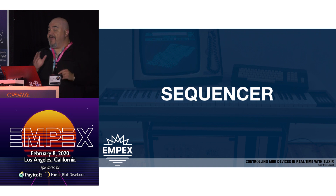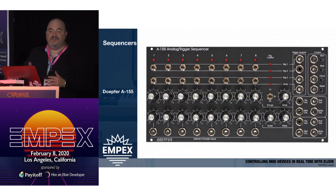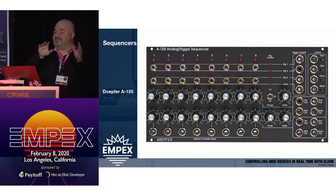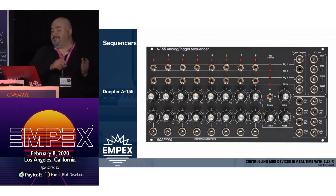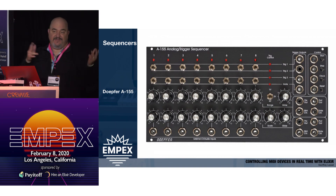One of the things we're going to talk about is sequencers. This is an analog sequencer — the Doepfer A155. Each of those 16 knobs on the left dials in a certain control voltage. Every time it's on a particular step, it sends out a certain voltage through an output. As you go to the next step, it sends different voltage based on where that knob is, going through all 16 steps, outputting beeps and boops depending on where you plug the thing in.